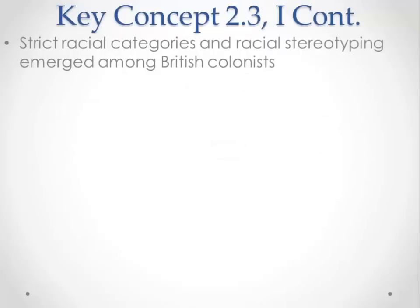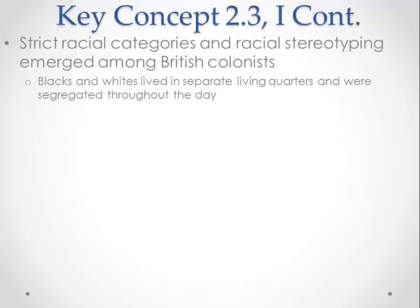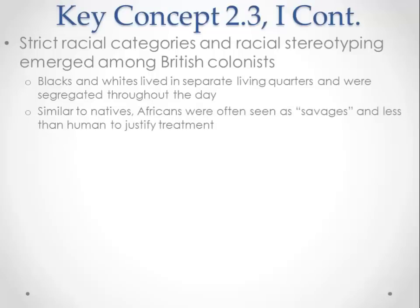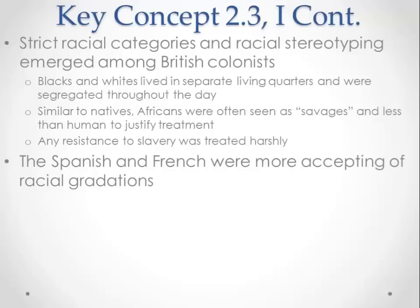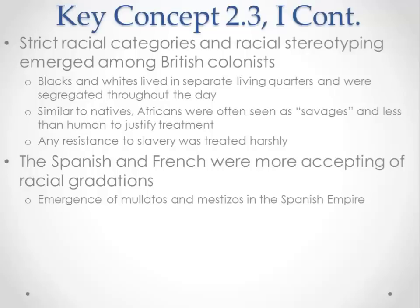Strict racial categories and racial stereotyping emerged among British colonists. Blacks and whites lived in separate quarters and were segregated throughout the day. Africans were often seen as savages and less than human to justify their harsh treatment, and any resistance to slavery was treated very harshly. The Spanish and French were more accepting of racial gradations. We see the emergence of mulattoes — individuals of European and African ancestry — and mestizos — individuals of European and Native American ancestry — under Spanish and French rule, with far more intermarrying than under the British.